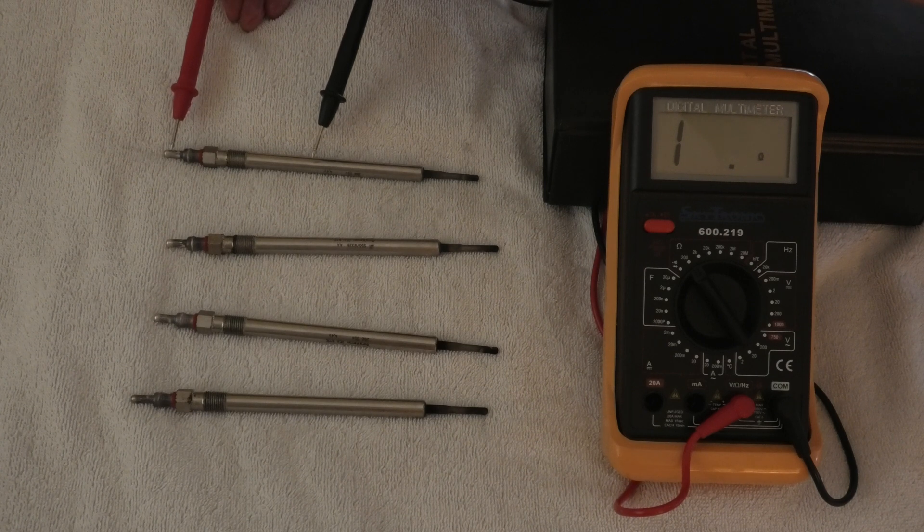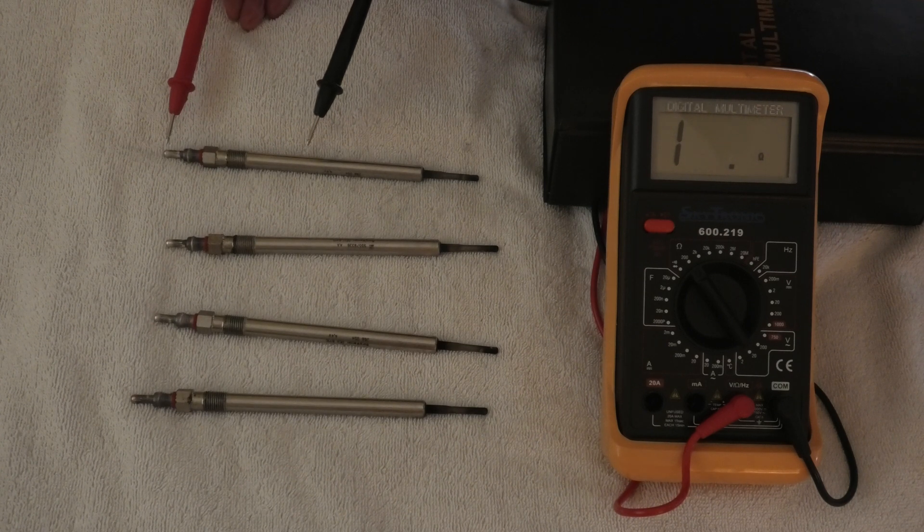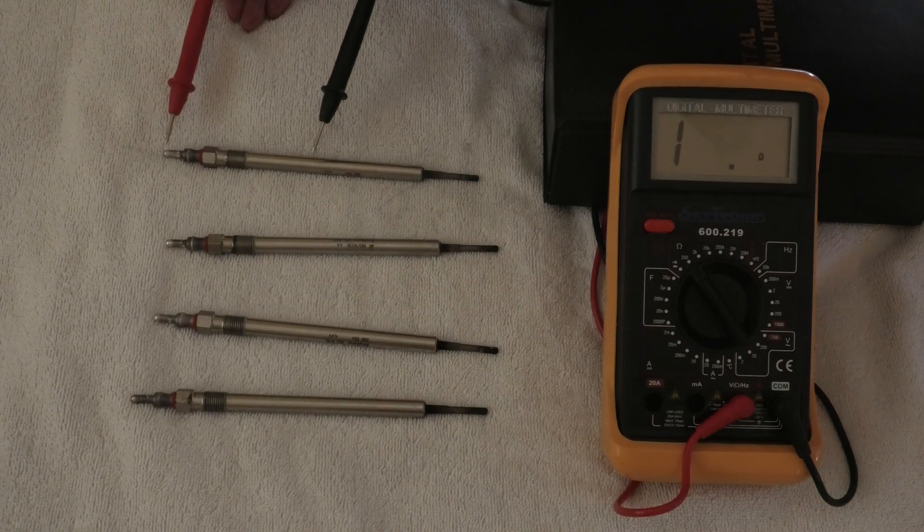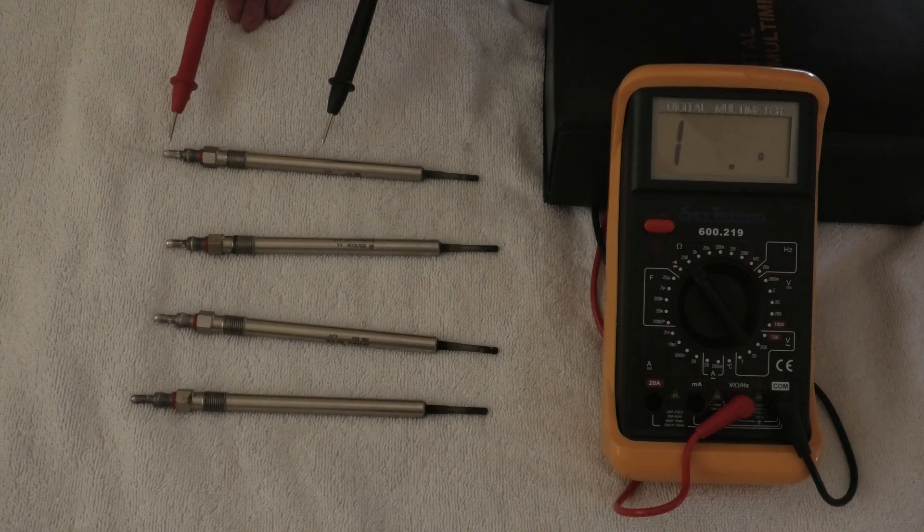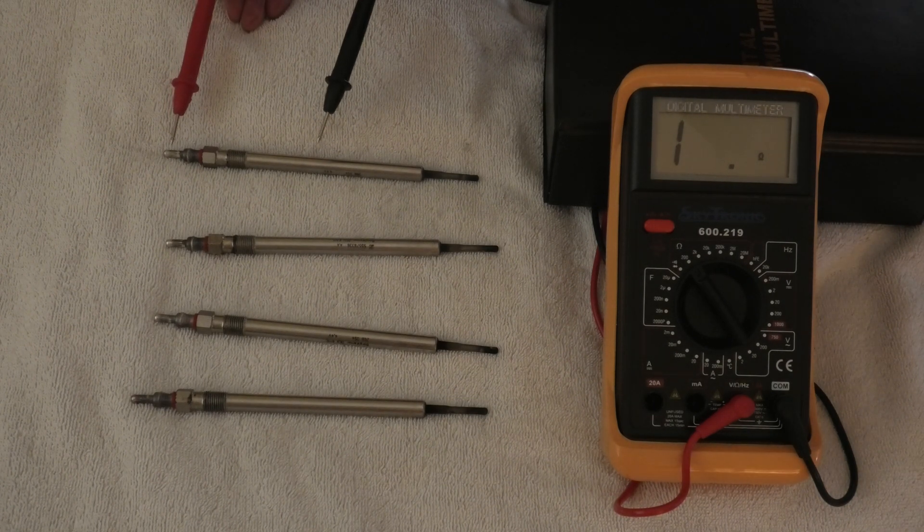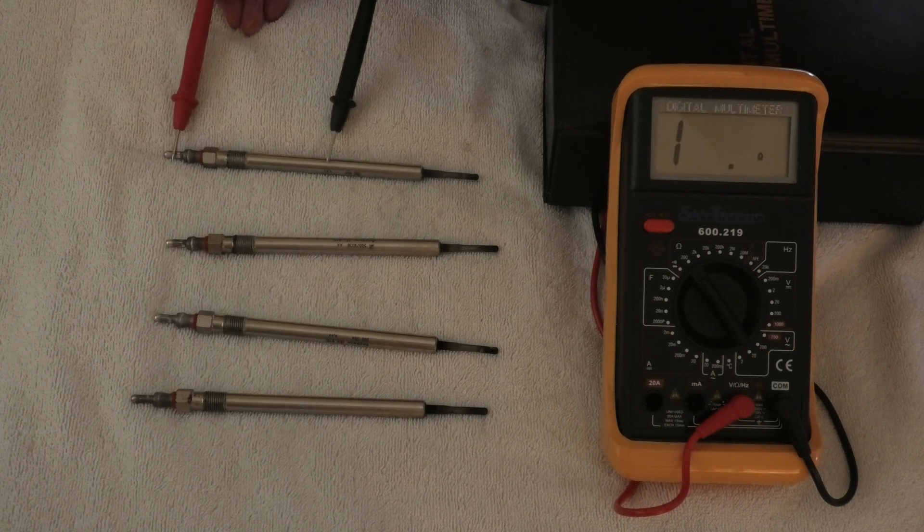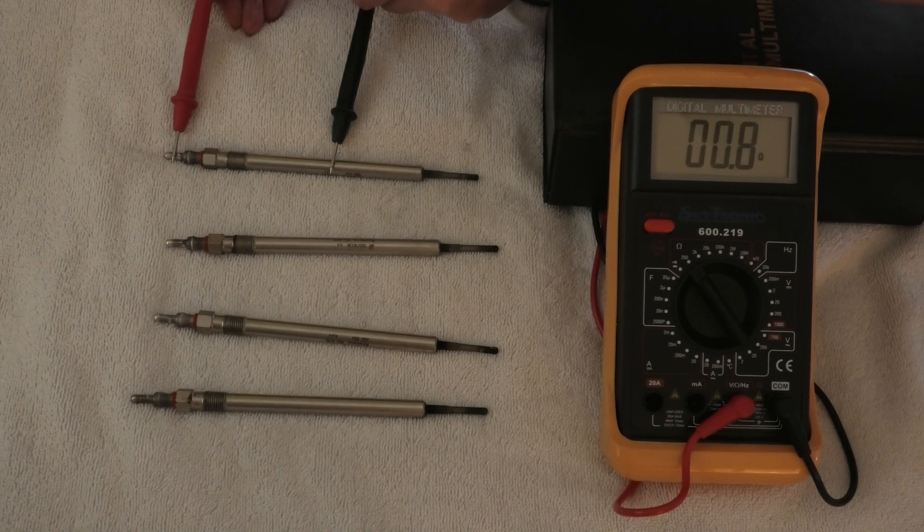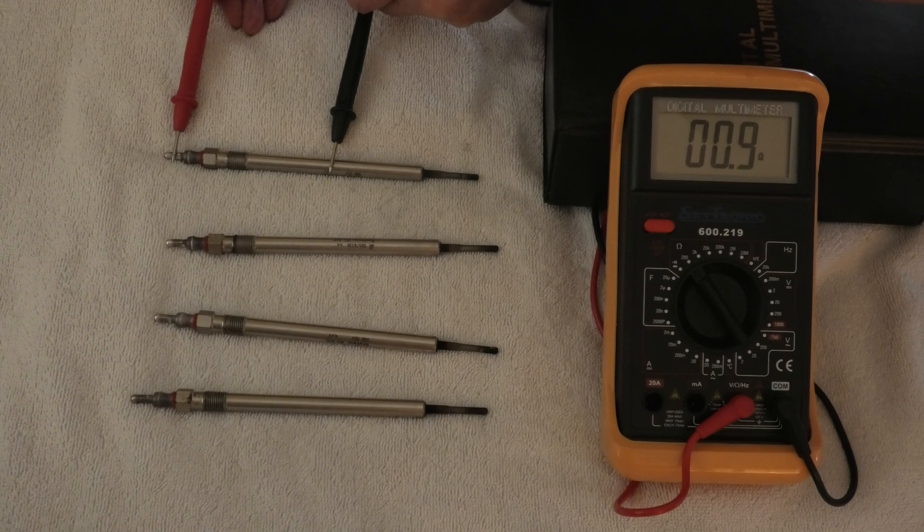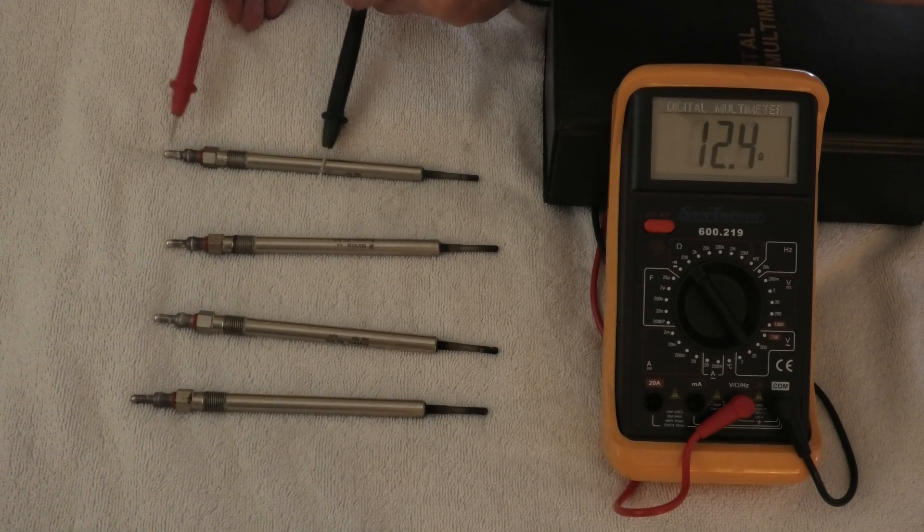Okay, we're going to show you how to test glow plugs. You have a multimeter and you set it on ohms and you test them. So if you press down, you can see that's registering 0.6, 0.7. You can see that works.